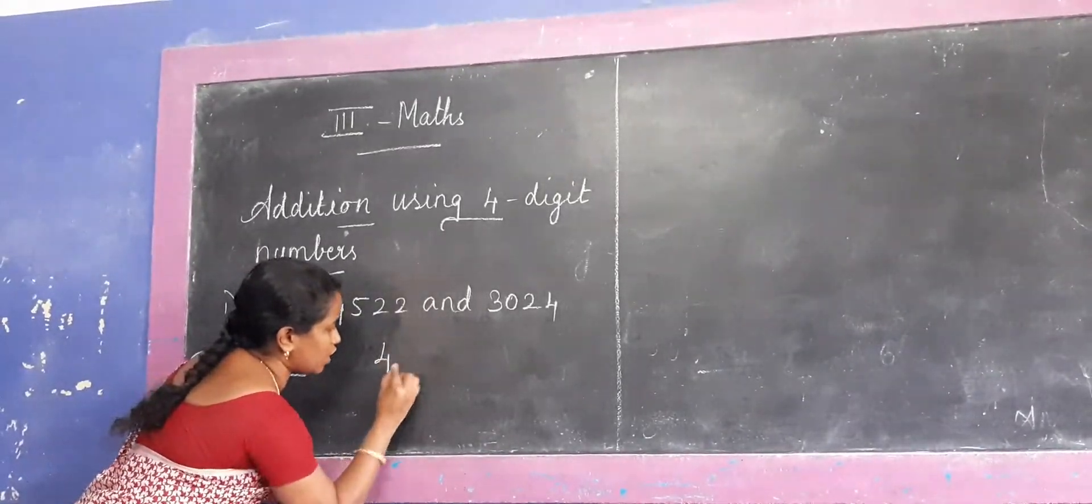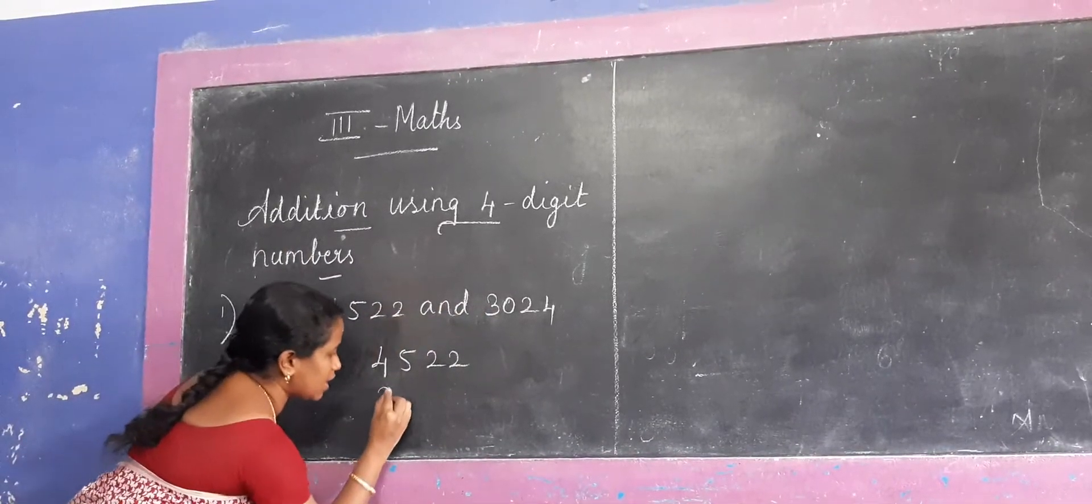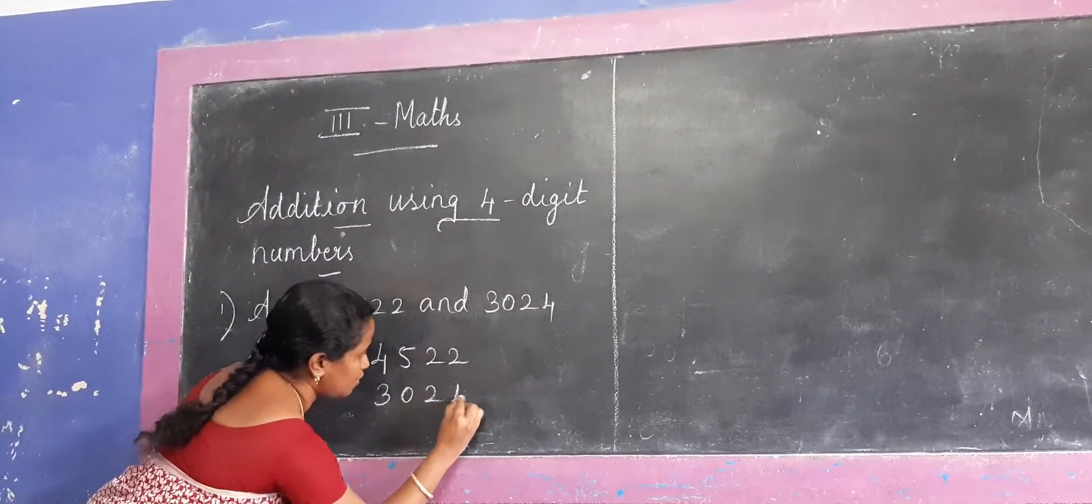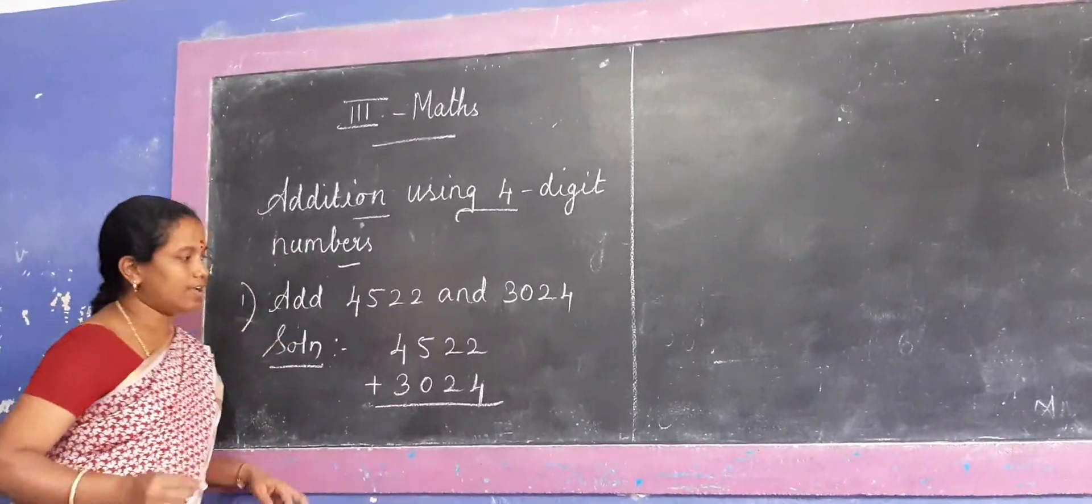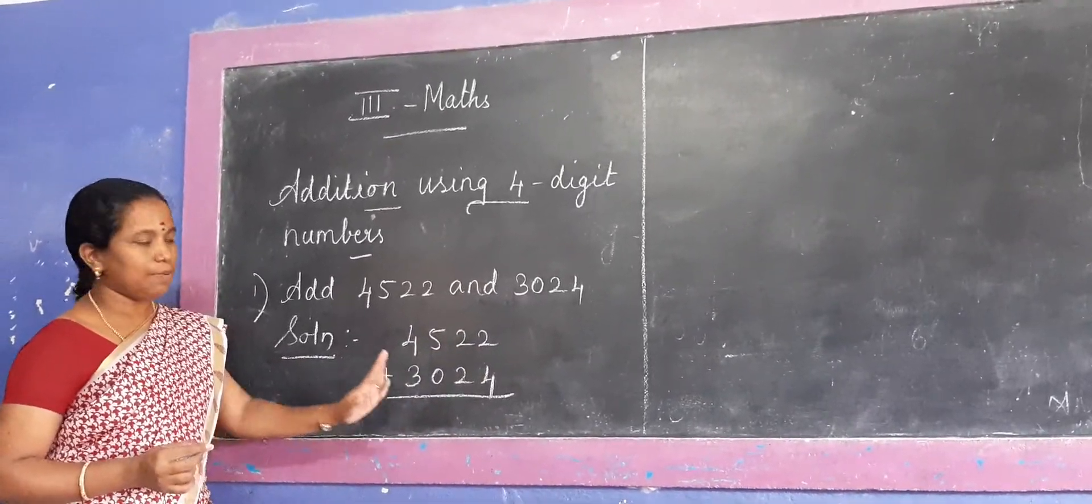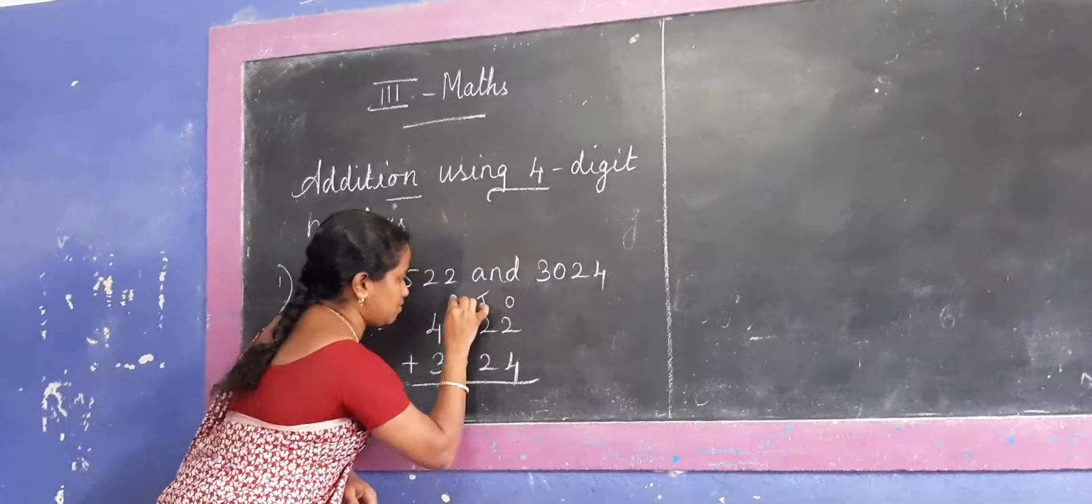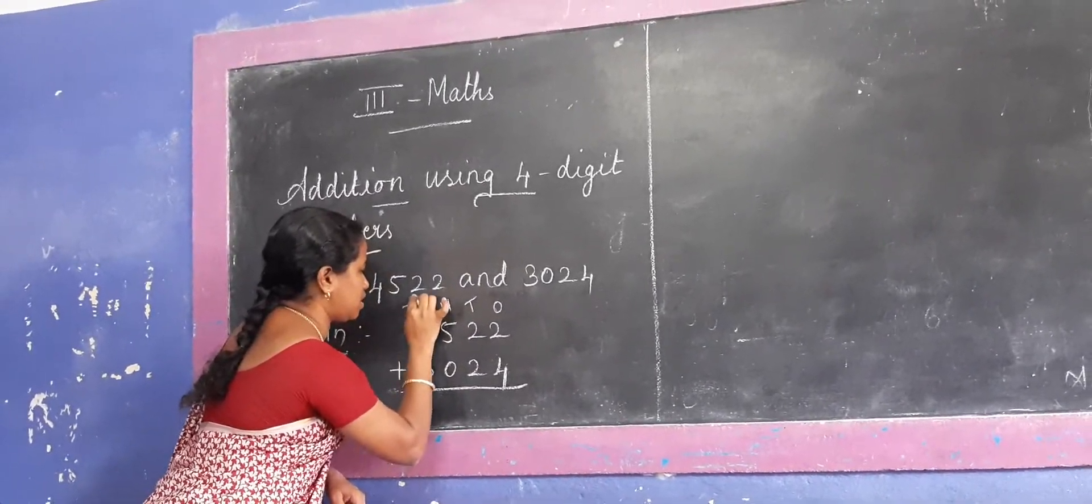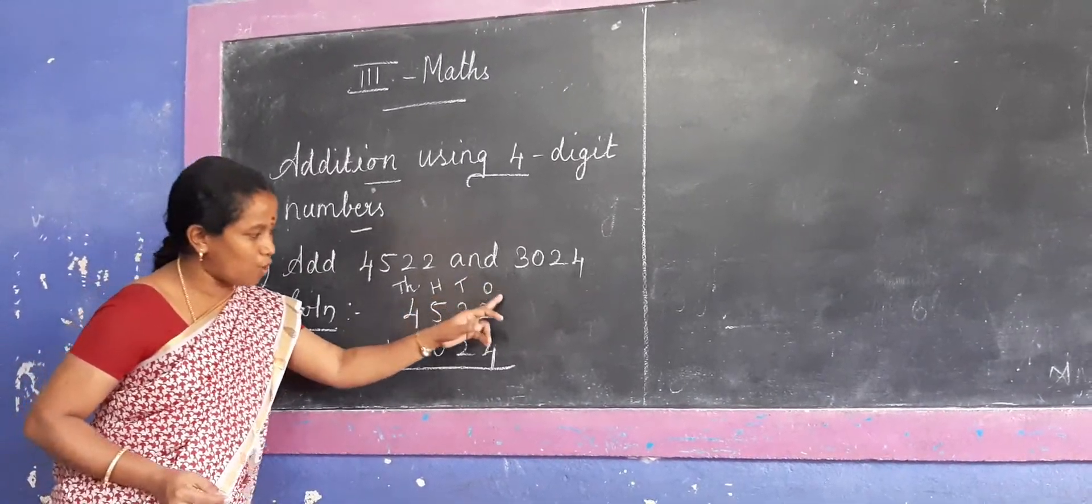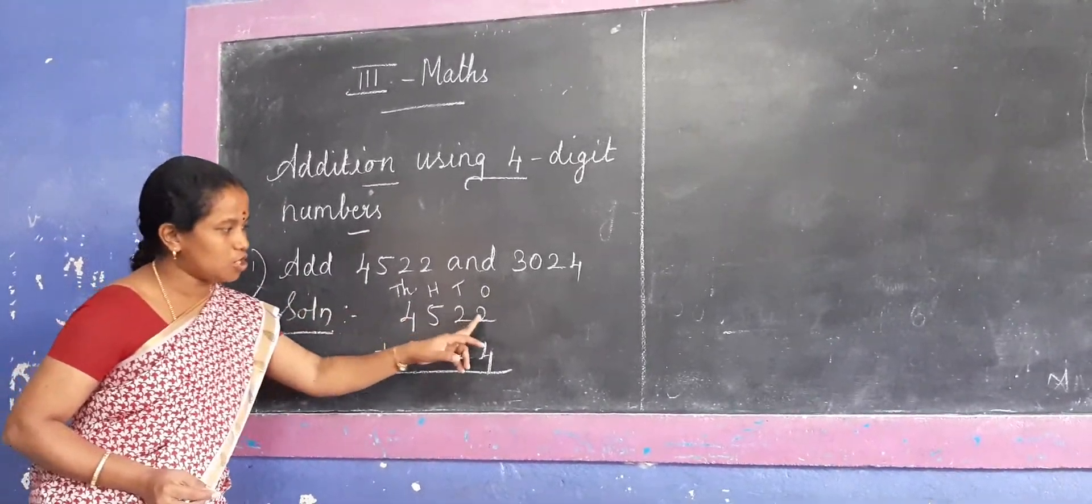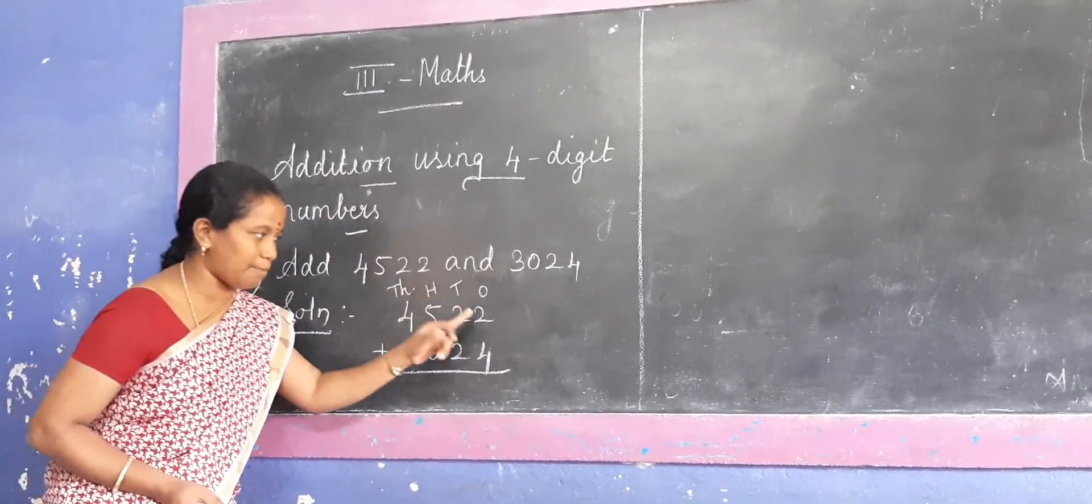Solution. So, addition first number first. So, 4522, next number 3024. Add and plus simple. Next add place value, ones, tens, 100, 1000. Once tens 100 1000. This means once place, like that add.